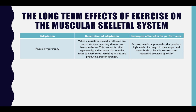Muscle Hypertrophy: When a muscle is strained, small tears are created. As they heal, they develop and become thicker. This process is called hypertrophy and it means that the muscles adapt to exercise by increasing in size and producing greater strength. For example, a rower needs large muscles that produce high levels of strength in their upper and lower body to be able to overcome the resistance provided by the water.